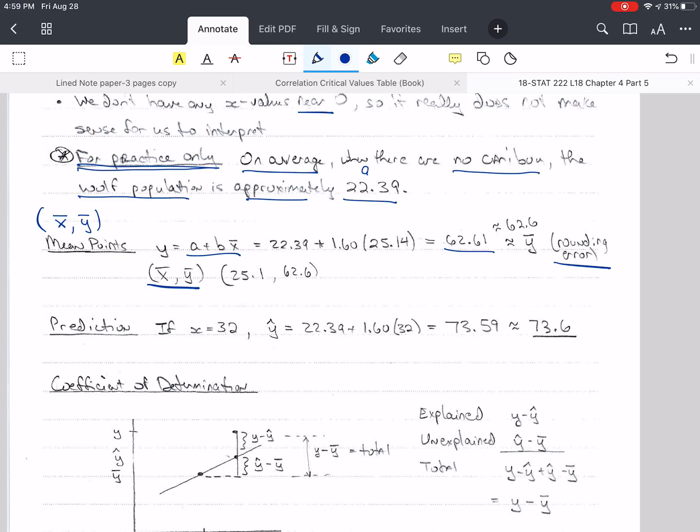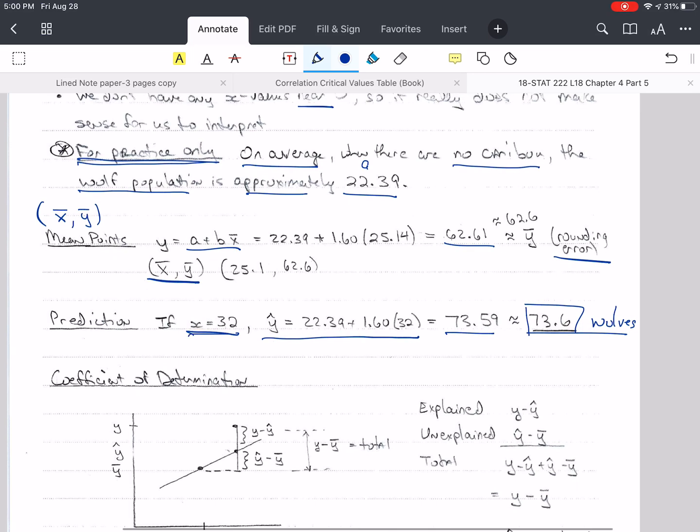Prediction. What if I want to know how many wolves can I expect or predict to have if there are 3,200 caribou? Remember these are in hundreds. So if x is 32, then I plug 32 into my regression equation and get 73.59 or 73.6 wolves. So we've just predicted the number of wolves if x is 3,200 caribou. But don't put 3,200 in here, put 32, because the units are in hundreds.